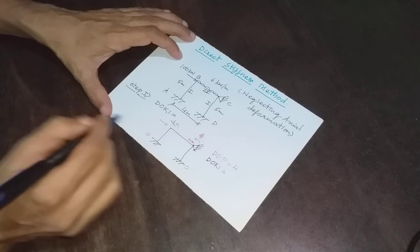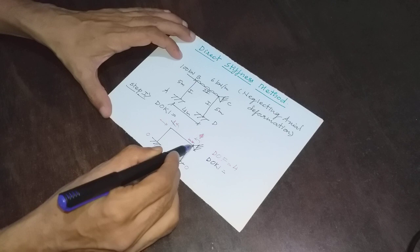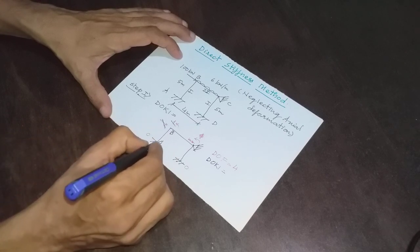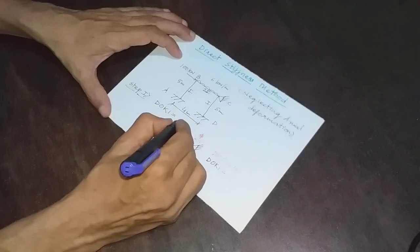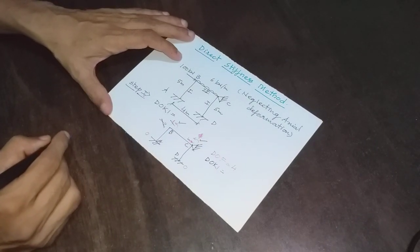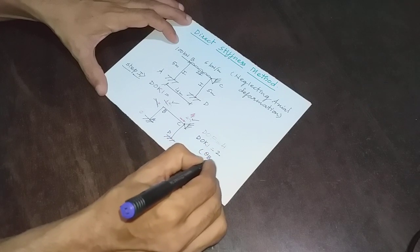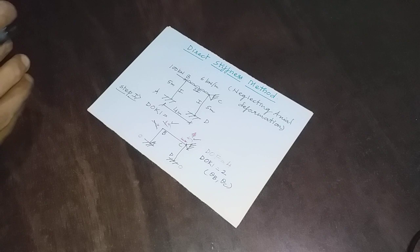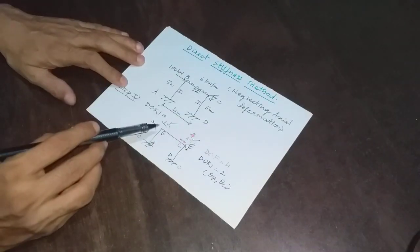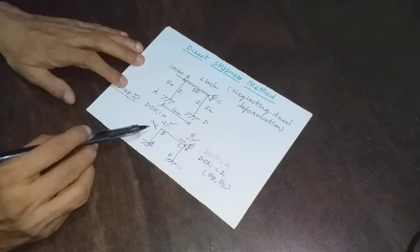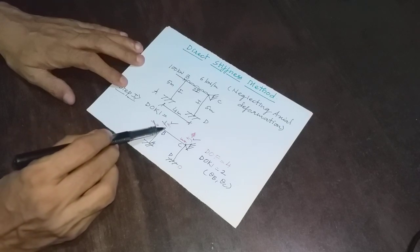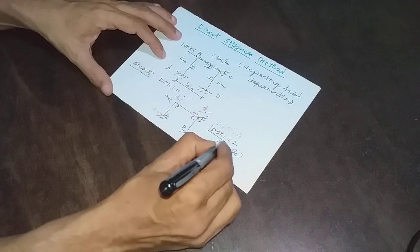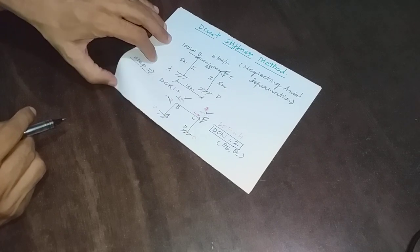Is it possible for B to move in the x-direction? No, because C is not going to move in x, therefore B will not move in x. Is it possible for B to rotate? Yes. Is it possible for C to rotate? Yes. So independent and possible degrees of freedom are 2 — that is theta B and theta C. With the direct stiffness method neglecting axial deformations, degree of kinematic indeterminacy is 2: rotation at B and rotation at C.